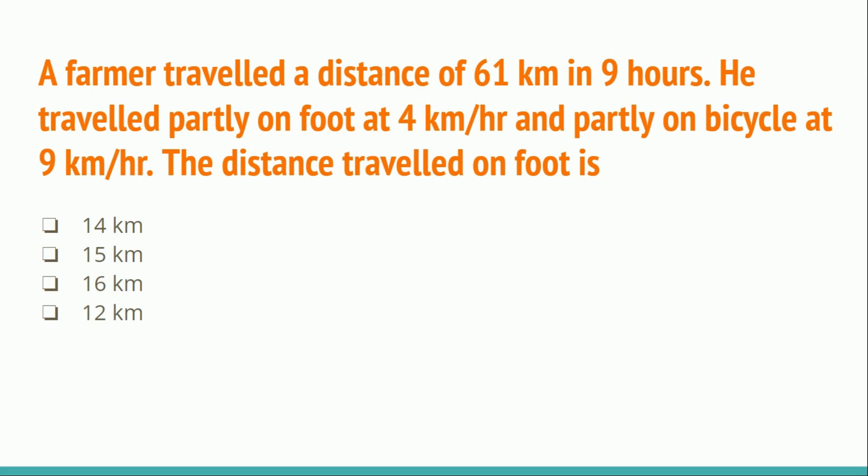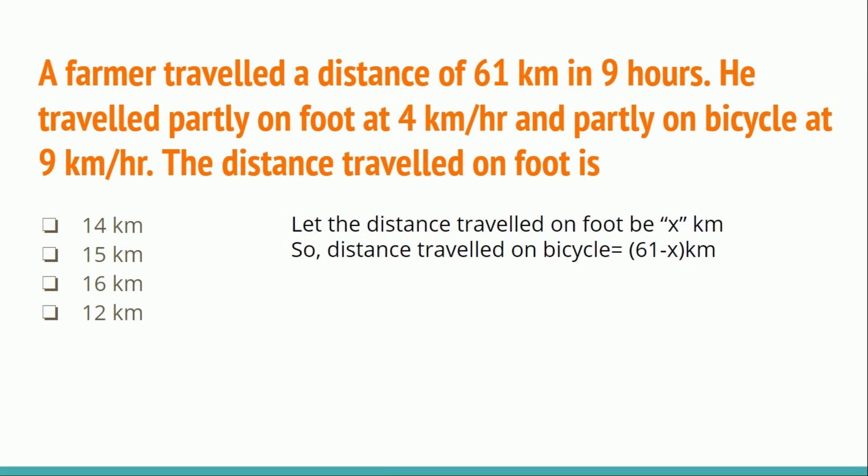Let the distance traveled on foot be X kilometers. Since the total distance is 61 km, the distance traveled on bicycle will be (61 − X) km. Therefore, X/4 + (61 − X)/9 = 9. Dividing distance by speed gives time, so X/4 is time on foot and (61 − X)/9 is time on bicycle. Adding both gives total time of 9 hours. Solving the equation, X = 16 km. The correct answer is 16.